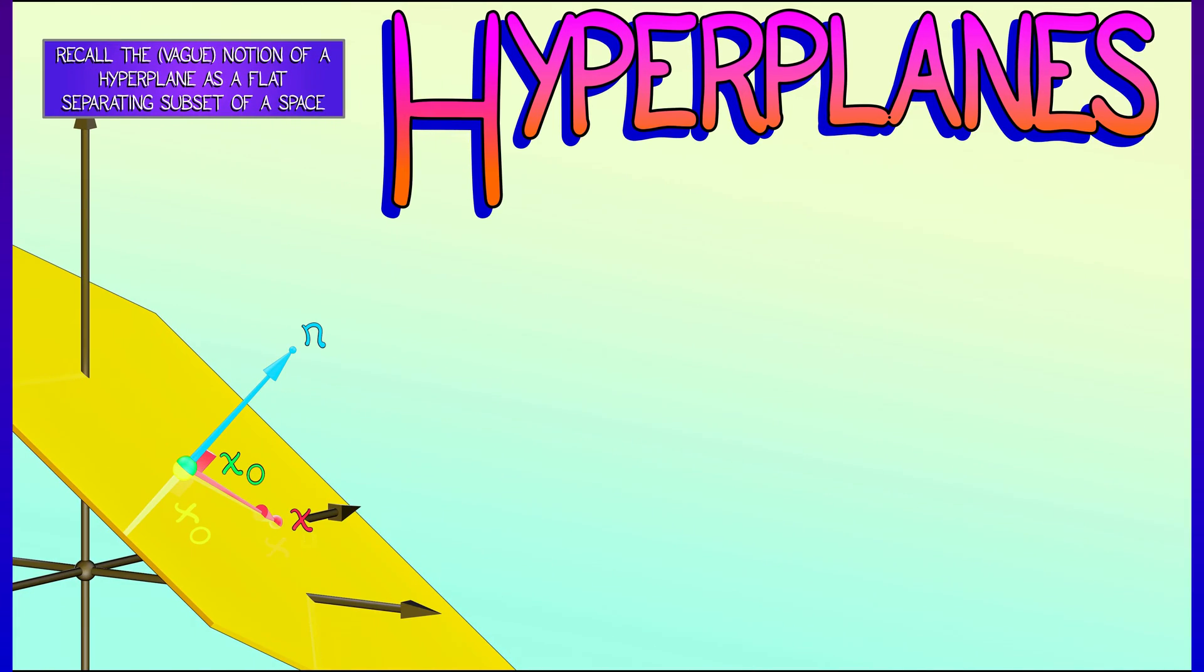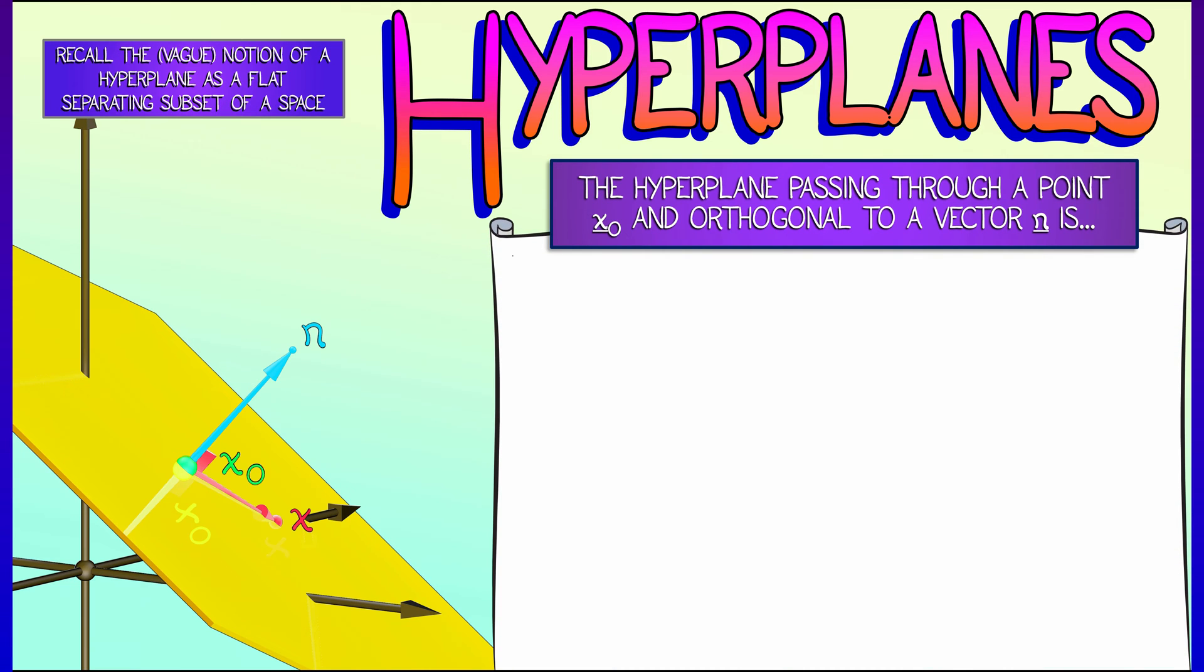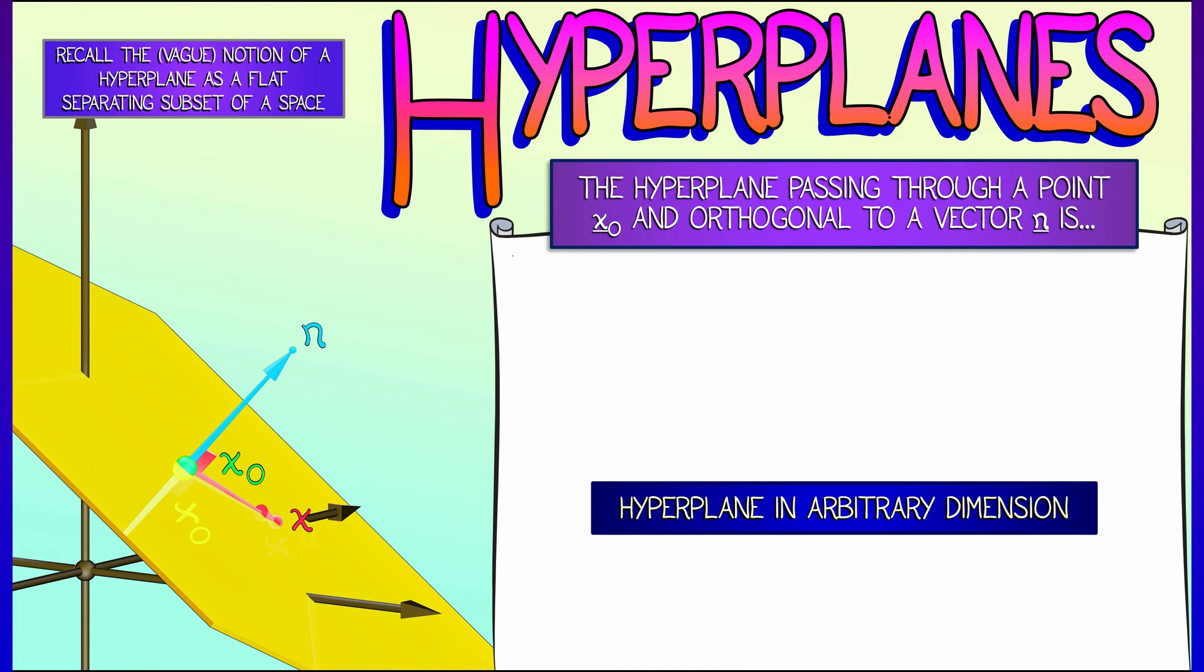Remember when we discussed this earlier? It may have been clear, it may have not been so clear, but here's a simple way to do it. Let's say you have a point x-naught and a vector n, and you want the equation of a hyperplane that passes through x-naught and is orthogonal to this vector n.